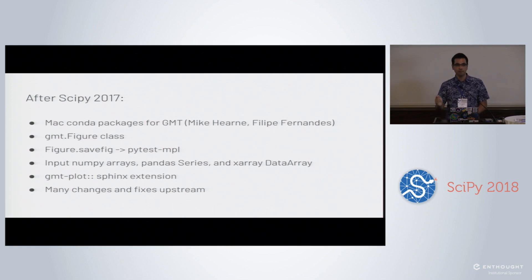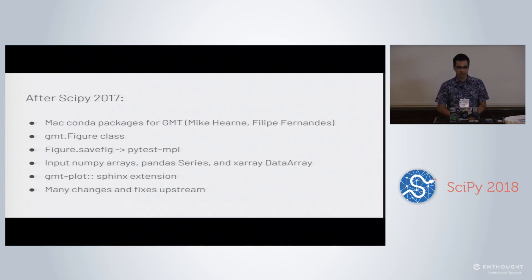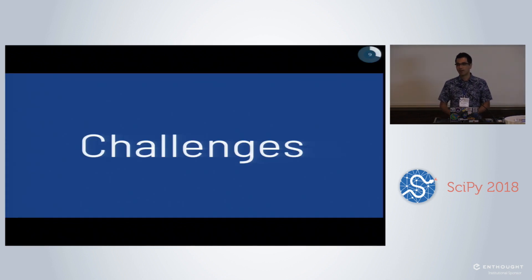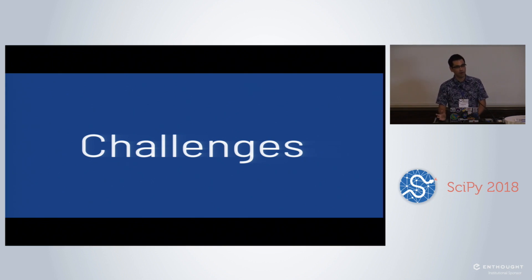We can now also import NumPy arrays, Pandas Series, and XArray DataArrays — we can grab the memory from those and pass the memory block directly to GMT. If you didn't do any slicing on your array, we can pass that memory directly with no copying. If you do a slice, we do have to copy because GMT needs a C-contiguous memory block. Recently I've also adapted the Altair Sphinx extension to make a GMT-plot Sphinx extension, so you can automatically generate a plot for your Sphinx website. We've made many changes upstream to GMT itself to make all this work.